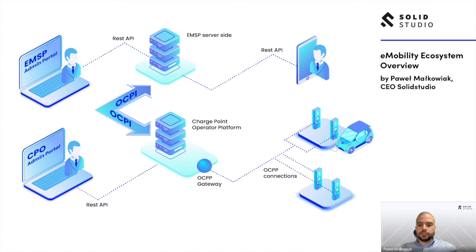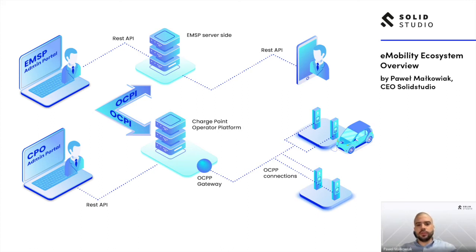And so the circle is closed — the EV driver has successfully started charging. From now on, the charging station reports to the Charge Point Operator platform about the current charging session: for instance, the current power or how much energy has been consumed. The CPO pushes this information to the EMSP, and the EMSP displays it to the EV driver.